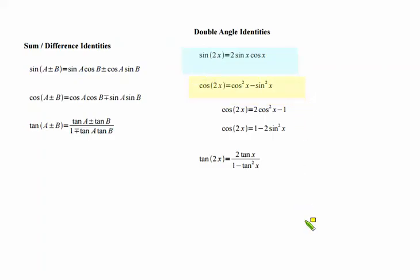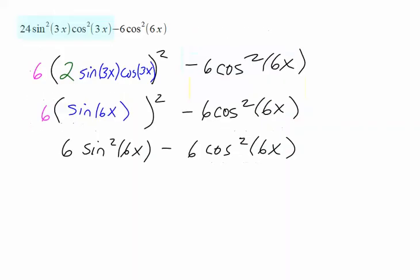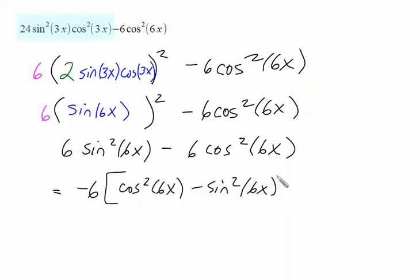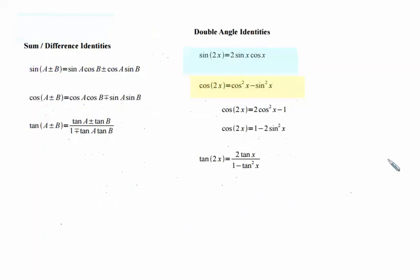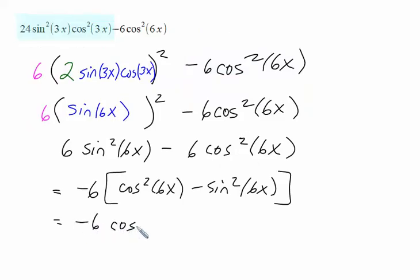Now, if we look at the double angle for cosine, we can manipulate the expression we have into something that fits that bill. We'll factor out a negative 6, and we'll write the cosine term first. And, based on our identity, if we have cosine squared something minus sine squared of that same something, it turns out to be cosine of double that something. So, this is going to be a negative 6 times the cosine of 12x.